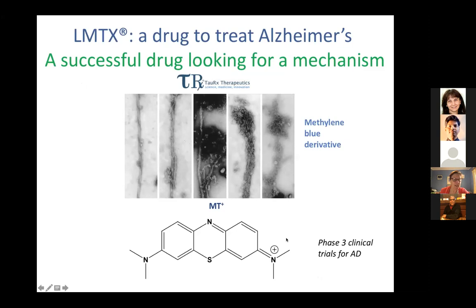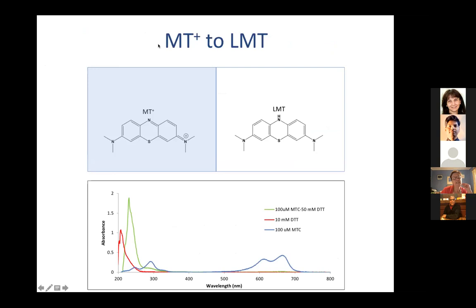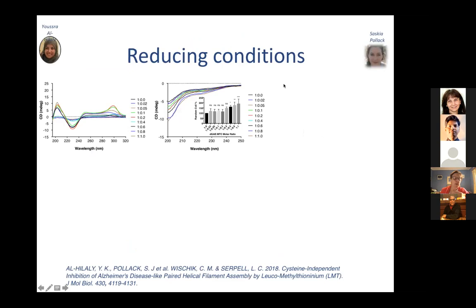To finally complete this story: we're working with TauRx Therapeutics, who found a drug being used in phase three clinical trials for Alzheimer's disease. This arose from early work by Claude Wischik showing that when you add this methylene blue derivative to paired helical filaments it appears to melt them. We've been looking in more detail at exactly what's going on with this drug. Briefly: the compound is a methylene blue derivative we call MT+, which is blue, and it becomes reduced to LMT — a completely clear solution — under reducing conditions.